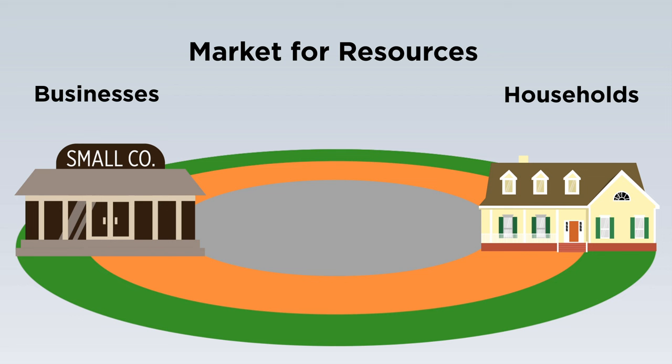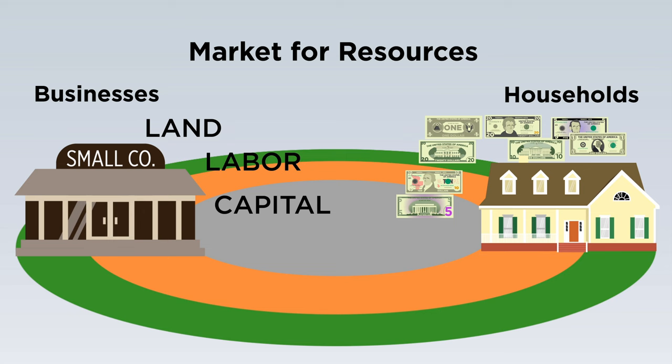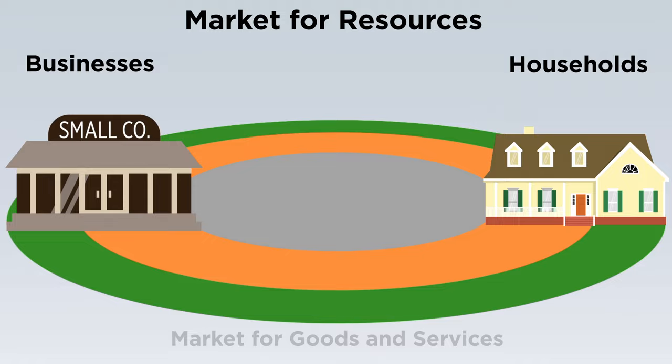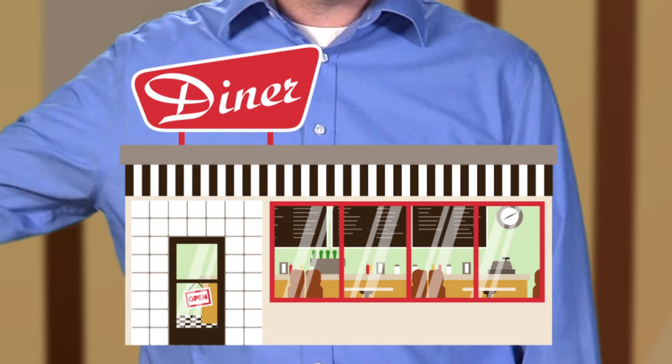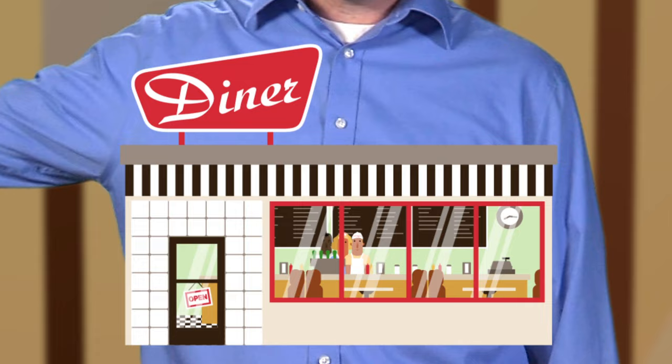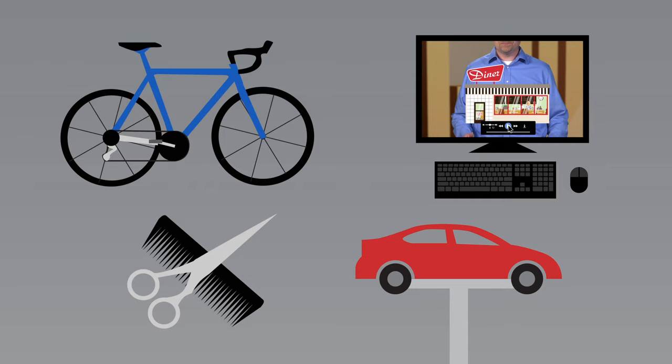At this point in the cycle, households sell resources to businesses, so households are holding income and businesses are holding resources. But what do households do with the income, and what do businesses do with their resources? Let's focus on the bottom of the model: the market for goods and services, where the goods and services produced by businesses are bought. Businesses use the economic resources they buy in the market for resources to produce goods such as computers and bicycles, and services such as haircuts and car repairs.